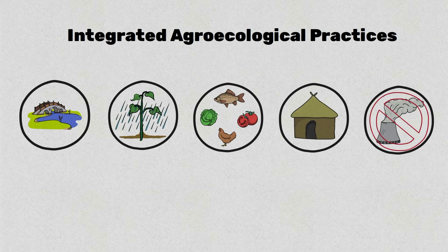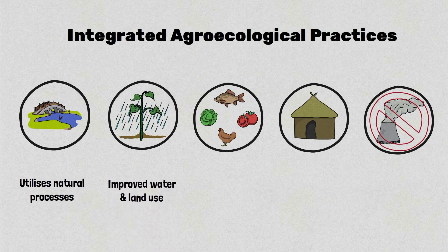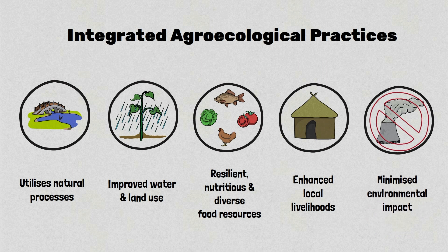Integrated agroecological practices offer a key opportunity for such transformation, utilising natural processes to develop food systems with improved water and land use that can provide resilient, nutritious and dietary diverse food resources, whilst enhancing local livelihoods and minimising the environmental impact of food production.